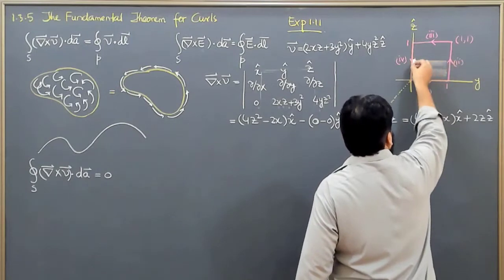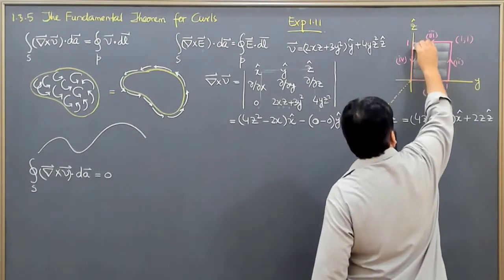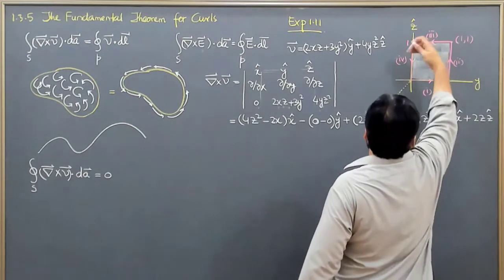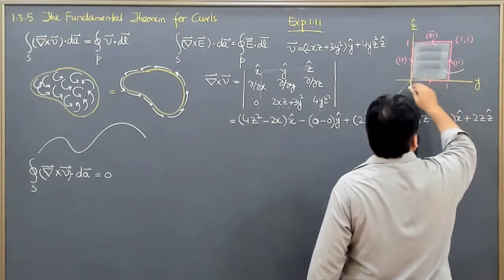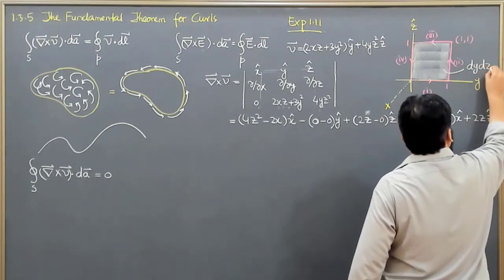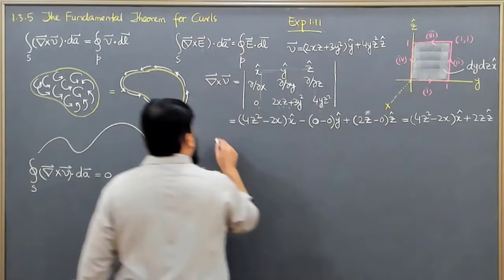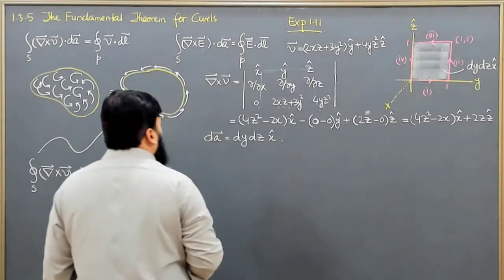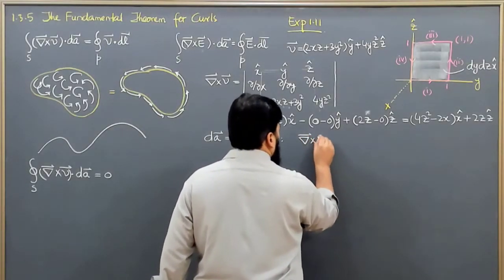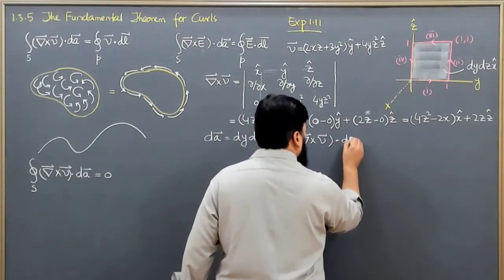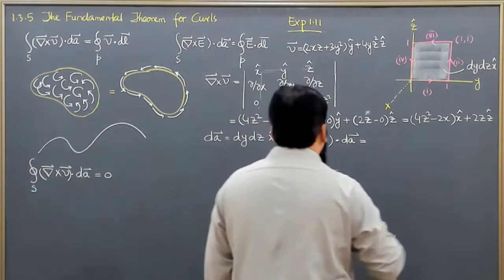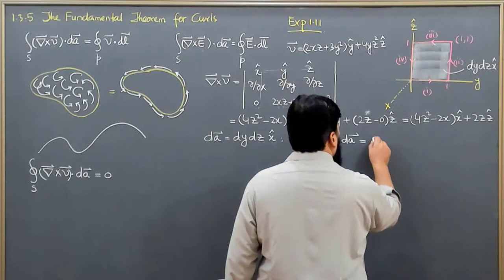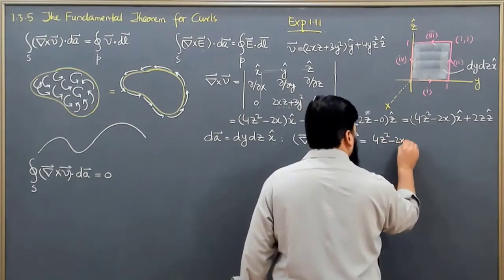The area element means the area of this square. The area is equal to dy and dz in the x unit vector, so da comes out to be dy dz times the x unit vector. Now, del cross V dot da is equal to multiplying the x unit vector component while the other components give us 0.